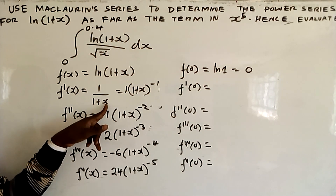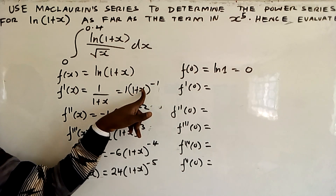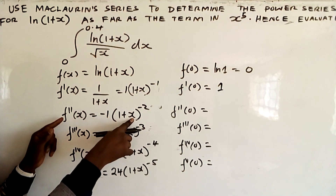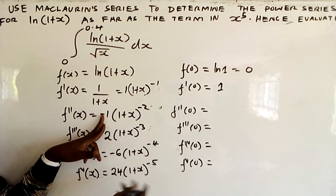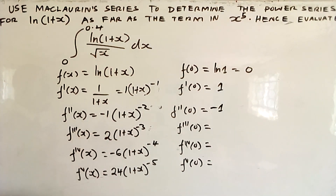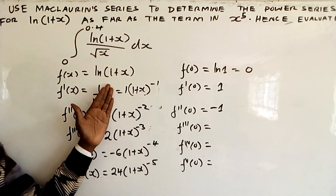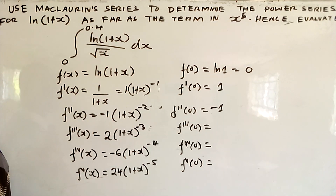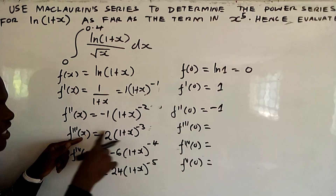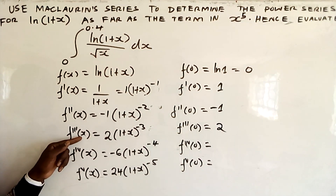For f''(0): putting x=0 into -1·(1+x)^(-2) gives -1·1 = -1. For f'''(0): putting x=0 into 2·(1+x)^(-3) gives 2·1 = 2.